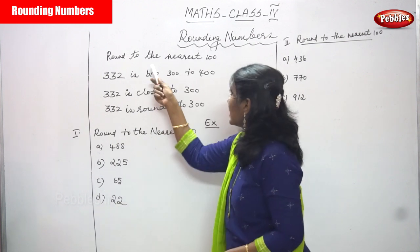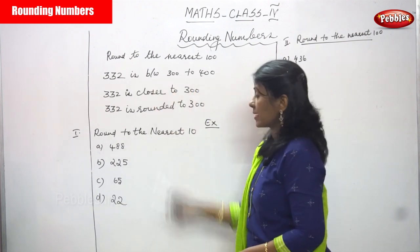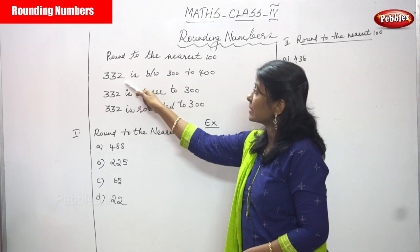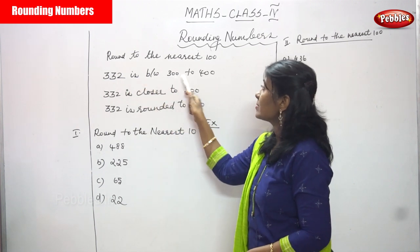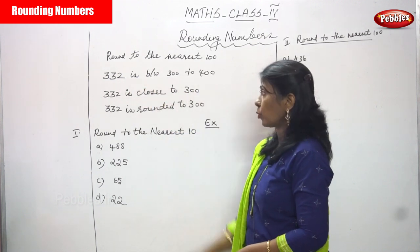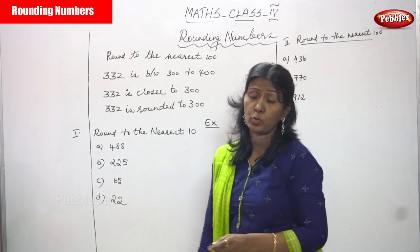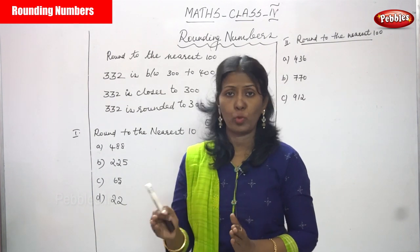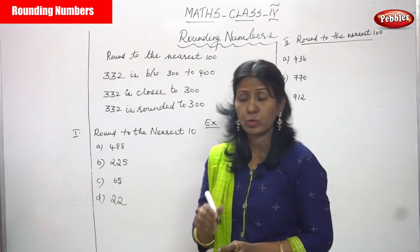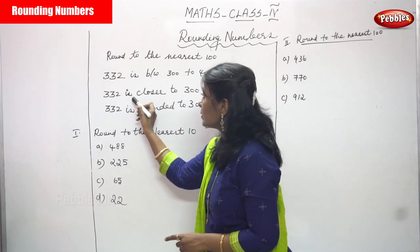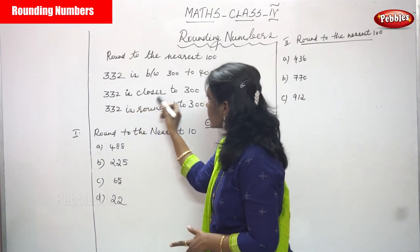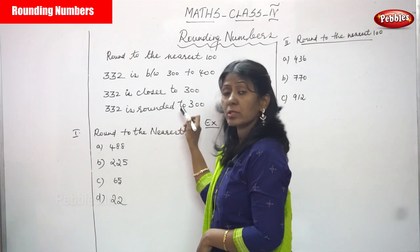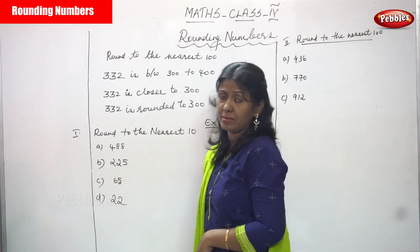Now, we are going to see round to the nearest 100. 332 is between 300 to 400. This number lies between 300 to 400. So, 332 is closer to 300. So, 332 is rounded to 300.